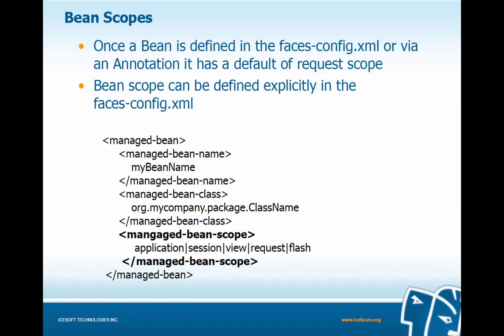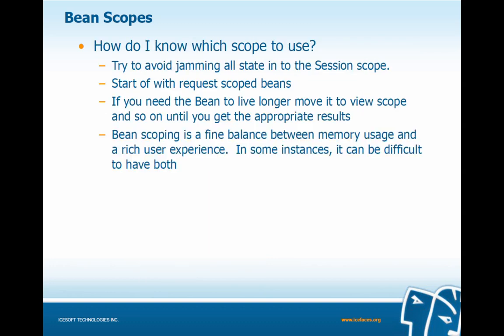Once a bean is defined in the faces-config.xml file or with an annotation, it has a default of request scope. Bean scope can be defined explicitly in the faces-config entry using the managed-bean-scope tag, where we can choose from application, session, view, request, or flash. We should try to avoid putting all state into session scope, which results in memory accumulation. We should start with request scope beans since they are actively garbage collected and have the shortest lifespan. But if we need the bean to live longer, we should move it into view scope and so on until we get our desired results. Bean scoping is a fine balance between memory usage and a rich user experience.